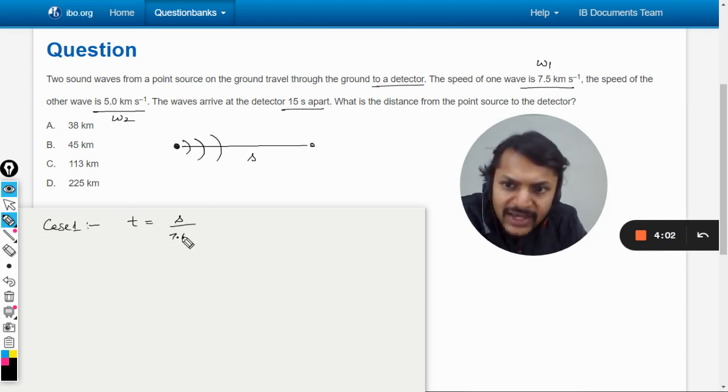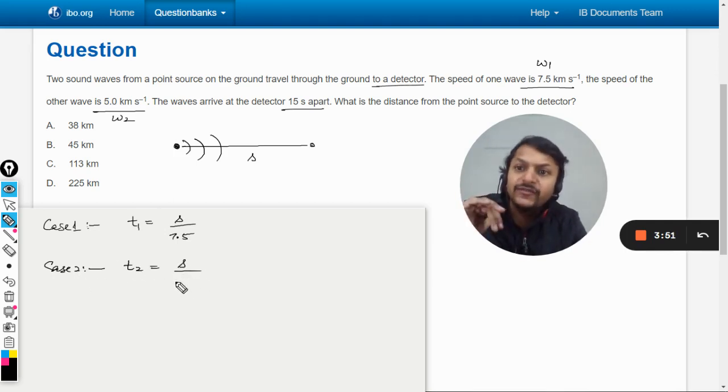Time taken will be s divided by 7.5, which I can call t1. In case 2, for the second wave, t2 can be taken as distance divided by velocity, which is s divided by 5 km/s.